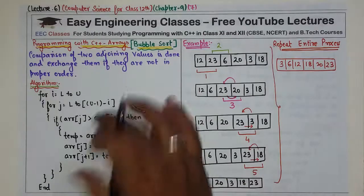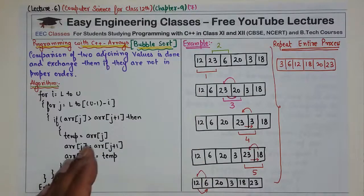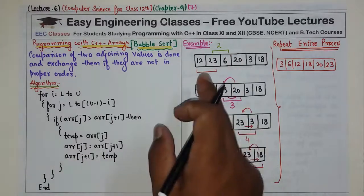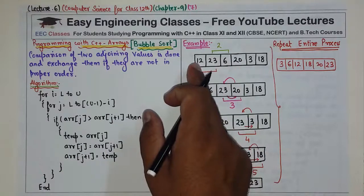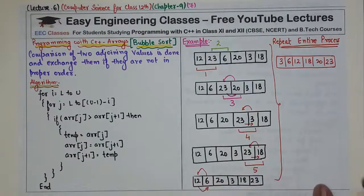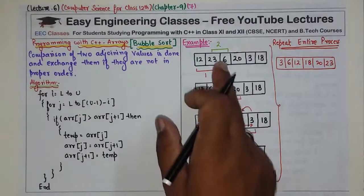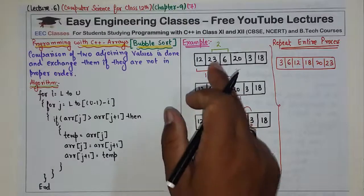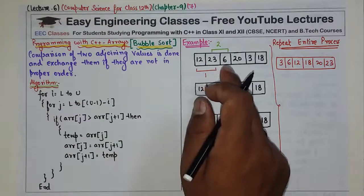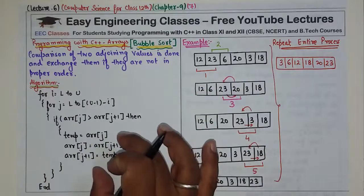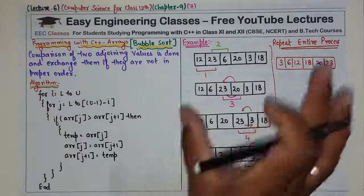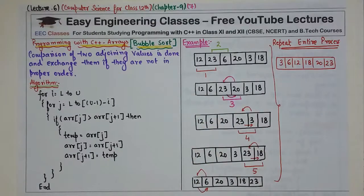Now this is the main part. If array[j] is greater than array[j+1], just as we have seen in the example — if this element is bigger, then we will interchange. Otherwise, we will not. You can complete the entire code as a loop.